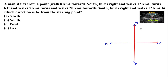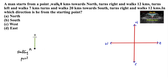Let's take the directions — east, west, north and south. Now let us see the problem. Let us mark the position of the person. Starting point is A. He walks 8 km towards north, meaning upside. He is moving towards up for 8 km. So let's consider this as 8 km towards the north.